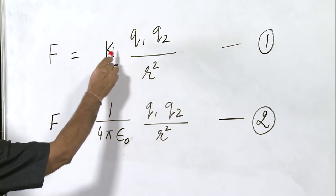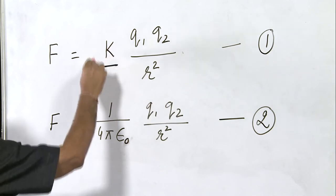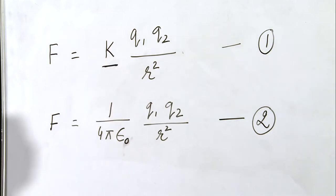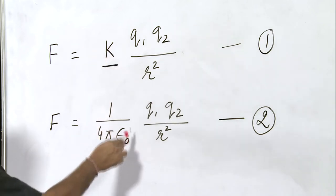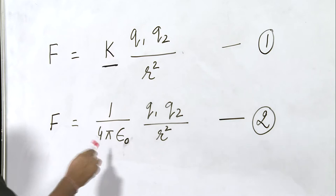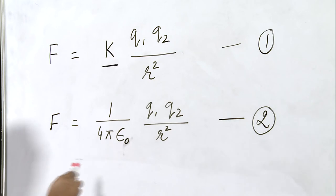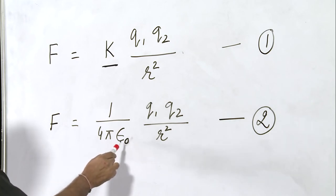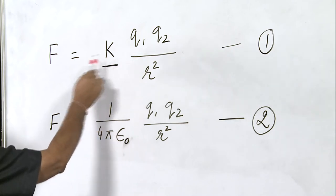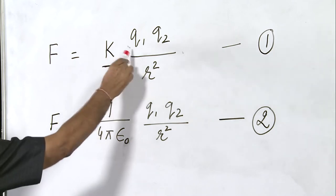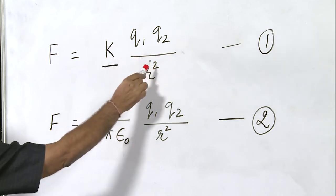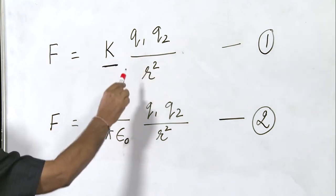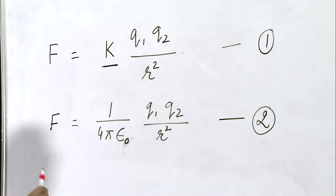This constant K has been found to be equal to 1 upon 4πε₀. Here ε₀ is the permittivity of free space, as the spacing between these two charges Q1 and Q2 is free space or vacuum.